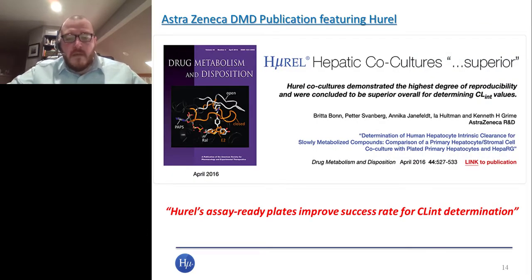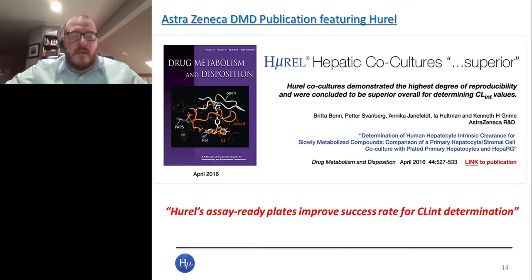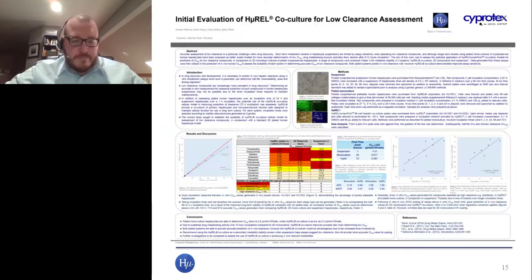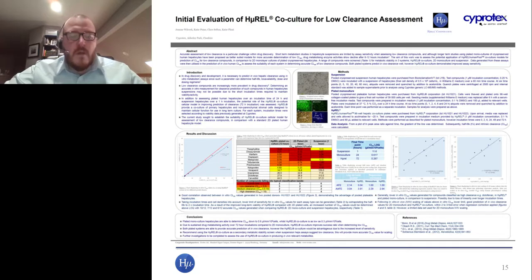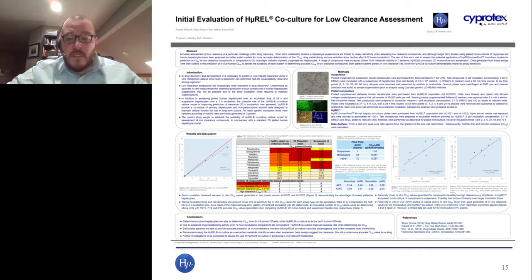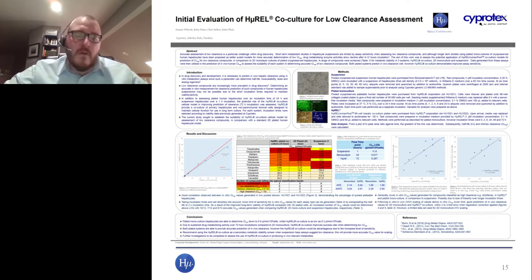A similar study was performed by AstraZeneca, using the same exact lot of primary hepatocytes to compare a plated model and the more advanced Hurel system — results published in Drug Metabolism and Disposition in April 2016. A group at Cyprotex, a CRO in the UK, also tested the Hurel co-culture system and found clearance values were much lower than traditional plated hepatocytes. Of 12 compounds tested, they were able to get a predicted in vivo clearance within three-fold for seven of those compounds.